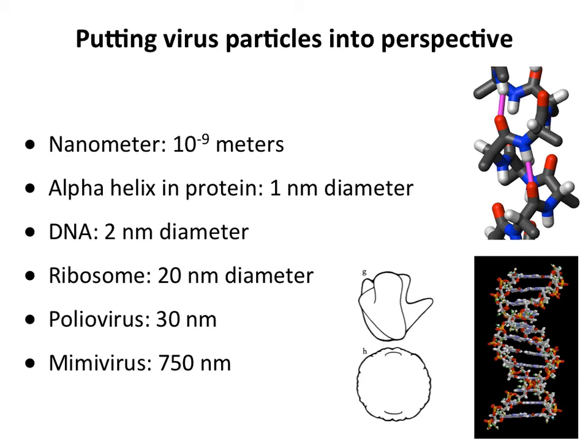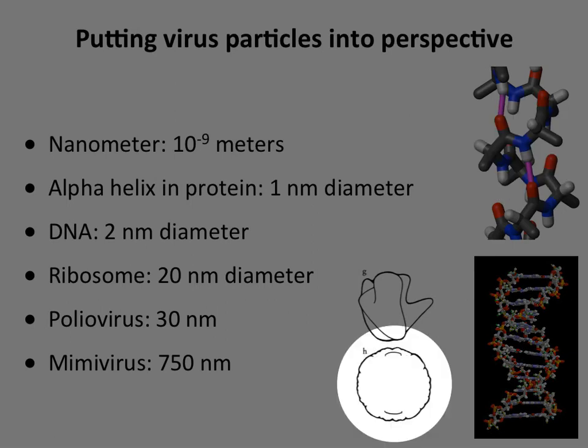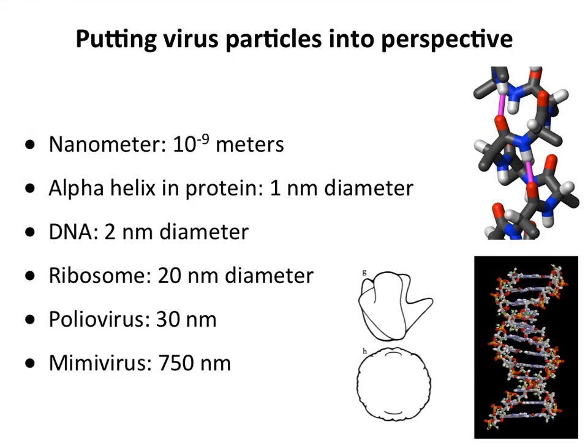Before we talk about the general ways that virions are put together, a little perspective on sizes again. We talk about nanometers quite often. An alpha helix of a protein is typically about a nanometer in diameter, DNA is two nanometers, and here is a poliovirus virion at 30 nanometers in diameter compared to a ribosome, which is about 20. So polio is a small virion. The biggest ones we know of are 750 nanometers — only about ten times bigger than the diameter of a DNA strand.